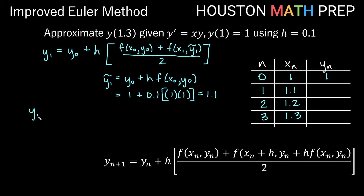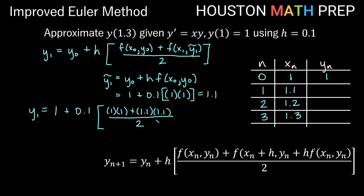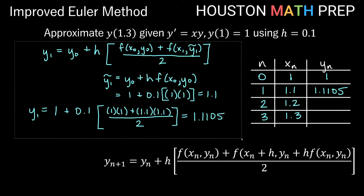Now we evaluate y1 for improved Euler's: y1 = y0 + h * [f(x0, y0) + f(x1, ỹ1)] / 2 = 1 + 0.1 * [(1 * 1) + (1.1 * 1.1)] / 2 = 1.1105. Finding y values using improved Euler's method requires computing Euler's method as well, because it lives inside the improved Euler's method formula.